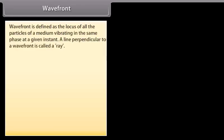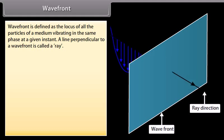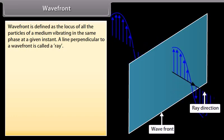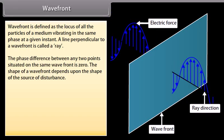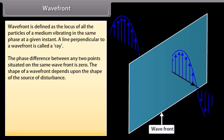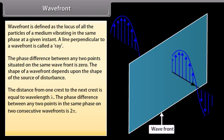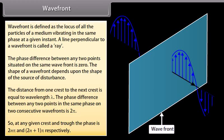Wave front is defined as the locus of all the particles of a medium vibrating in the same phase at a given instant. A line perpendicular to a wave front is called a ray. The phase difference between any two points situated on the same wave front is zero. The shape of a wave front depends upon the shape of the source of disturbance. The distance from one crest to the next crest is equal to wavelength lambda. The phase difference between any two points in the same phase on two consecutive wave fronts is 2π. So at any given crest and trough, the phase is 2nπ and (2n+1)π respectively, where n is an integer.